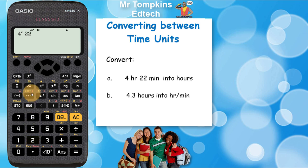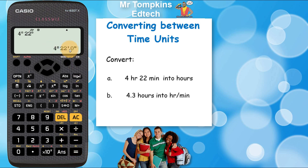Then I'm going to type in the 22 and then press that button again. On the top display it just draws another circle. But when I press equals, you'll see it converts it into 4 and then a little circle, then 22 and a dash, and then 0 and a double dash. That's the notation for 4 hours, 22 minutes and 0 seconds.